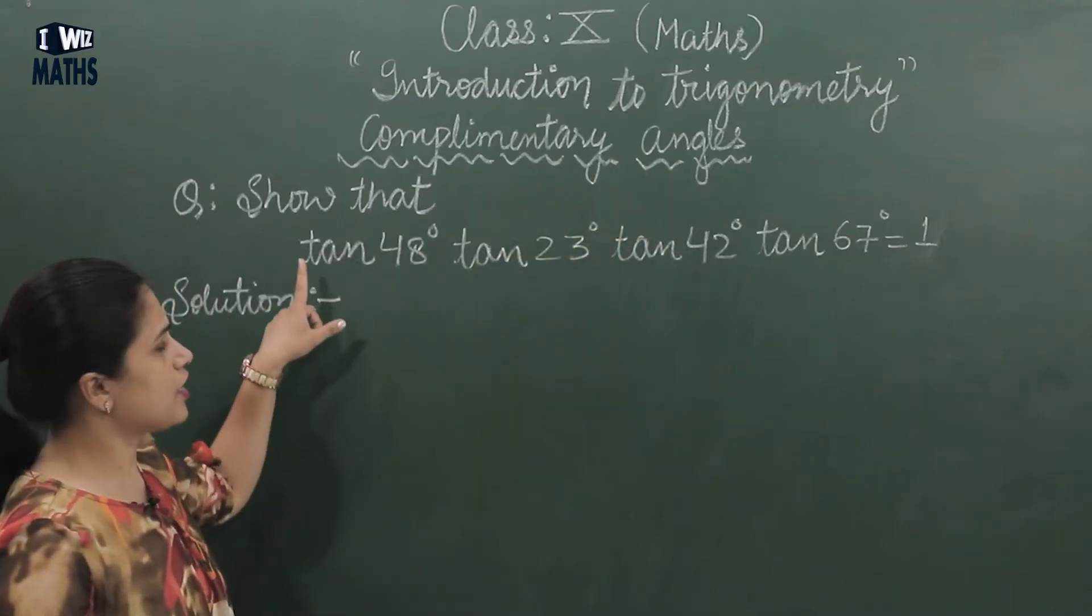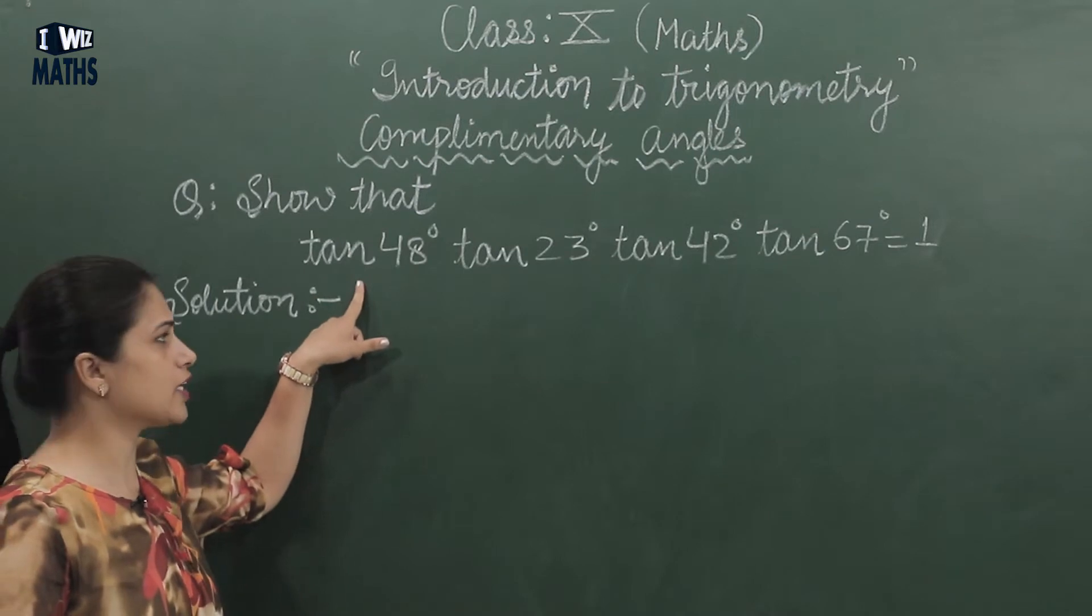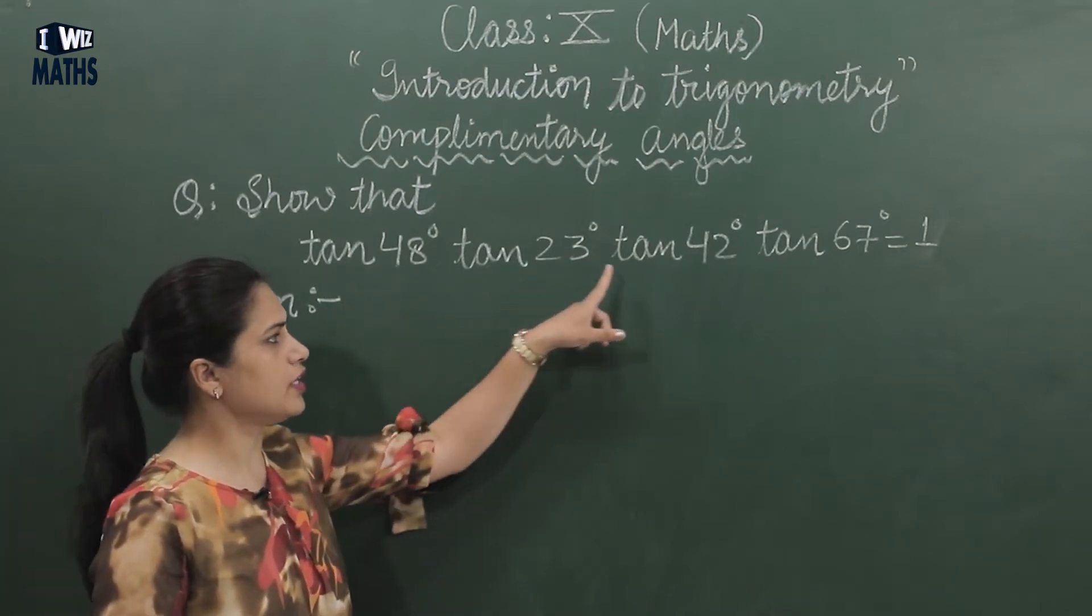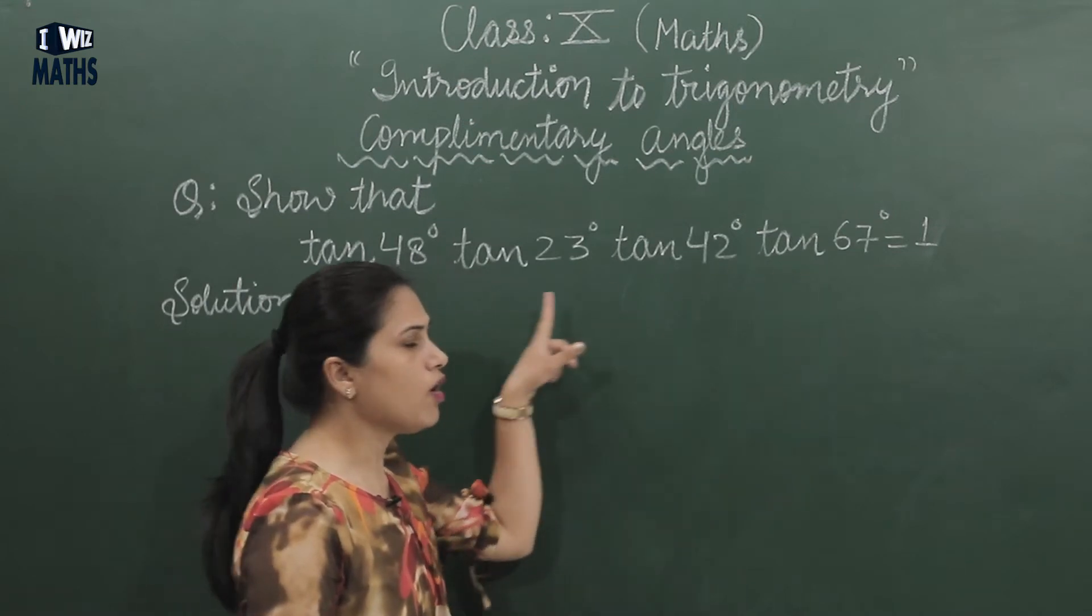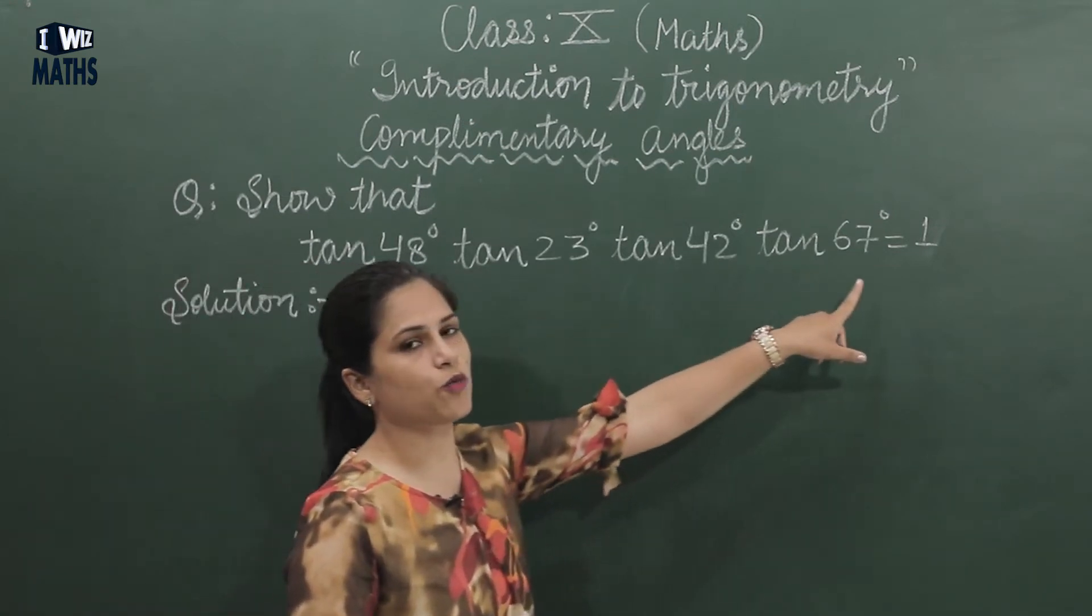Now you can see the question is show that tan 48°·tan 23°·tan 42°·tan 67°, all in multiplication, should be equal to 1.